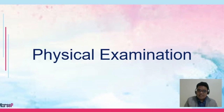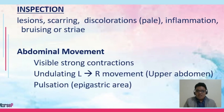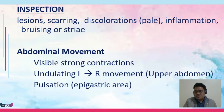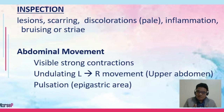Let's talk about physical examination for patients with gastrointestinal and nutrition problems. During inspection, we are watching out for lesions, scarring, and discolorations, especially if your patient appears to be pale. Paleness signals that your patient may have possible anemia due to a decrease of vitamin B12, which could possibly lead to pernicious anemia.